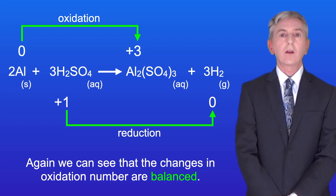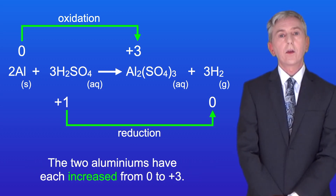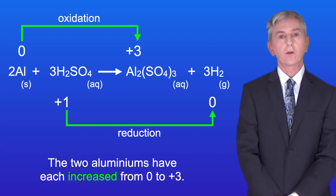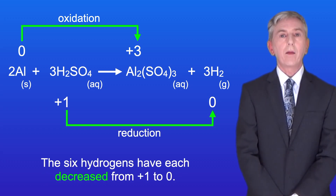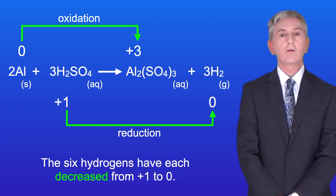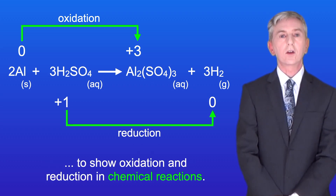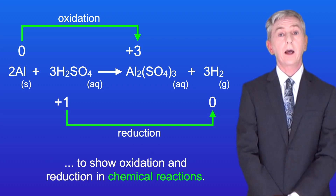Again we can see that the changes in oxidation number are balanced. The two aluminiums have each increased from zero to plus three and the six hydrogens have each decreased from plus one to zero. So hopefully now you can use oxidation numbers to show oxidation and reduction in chemical reactions.